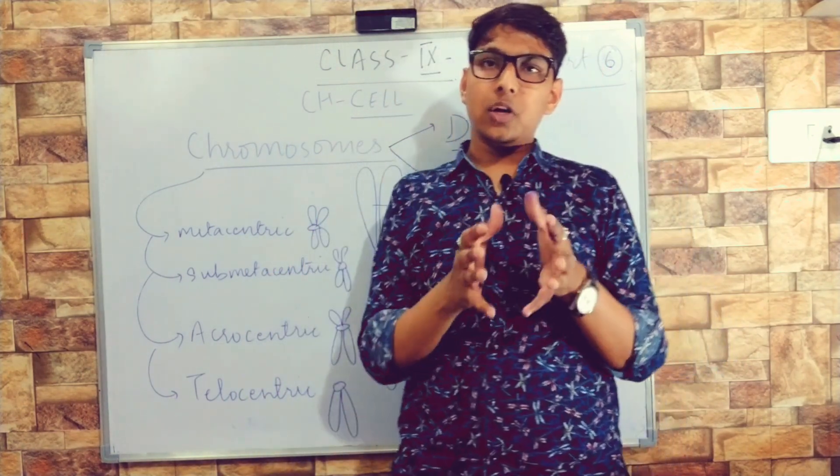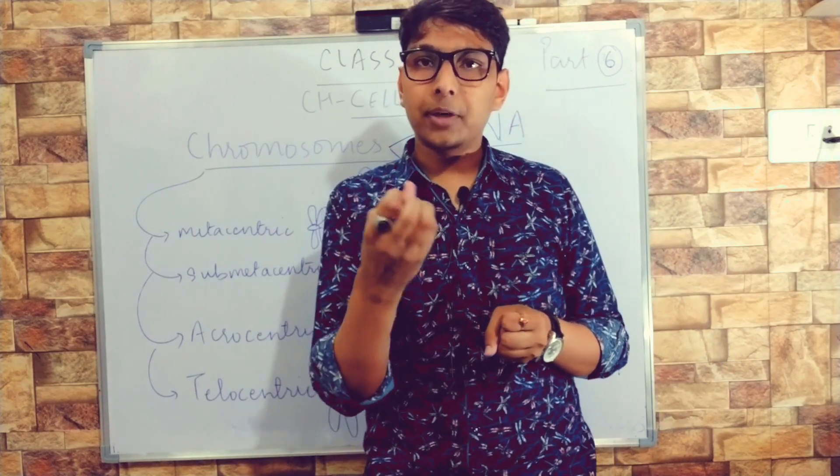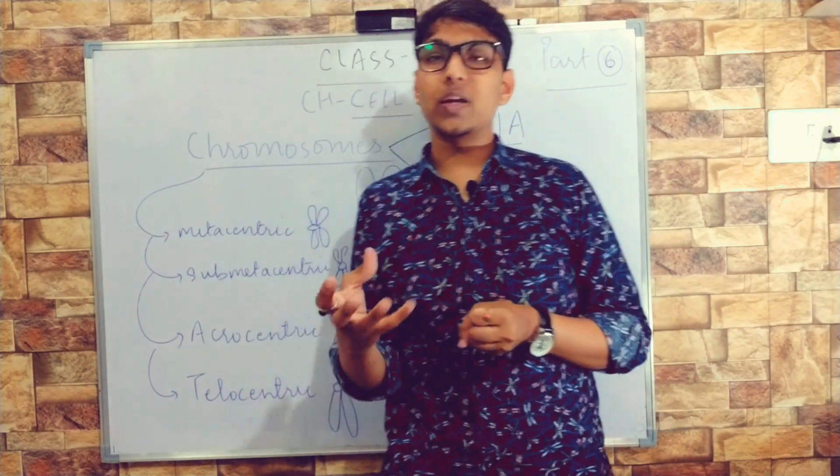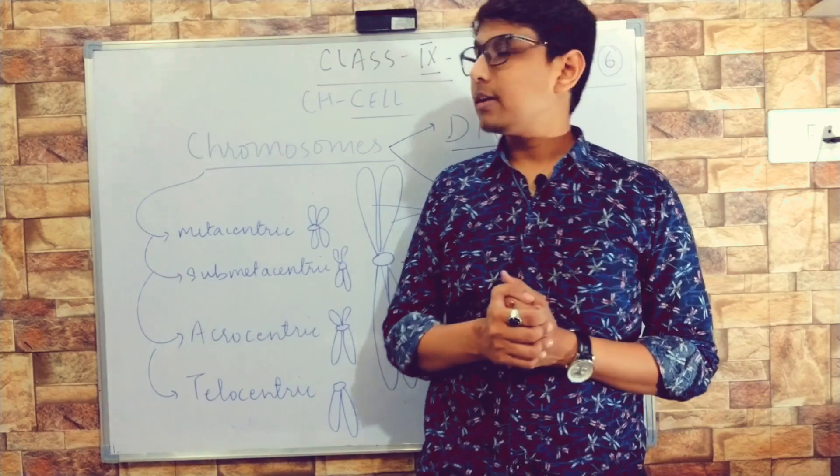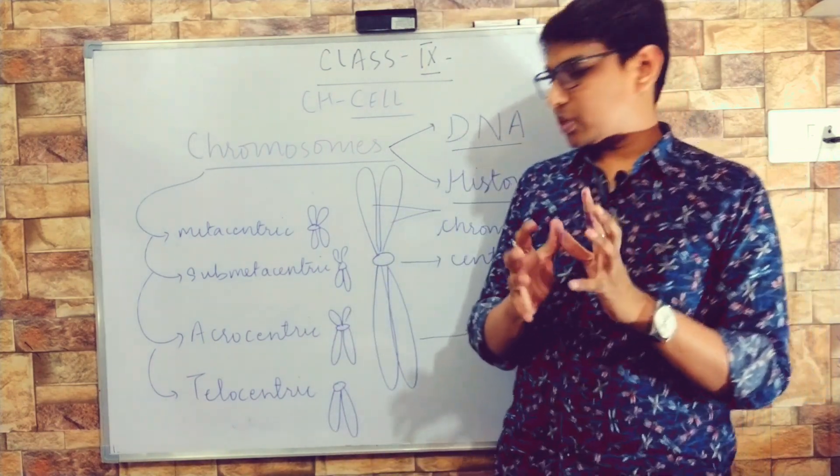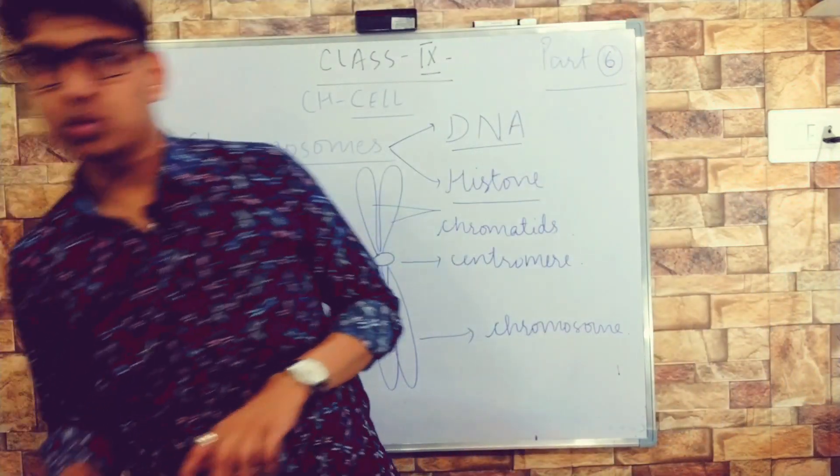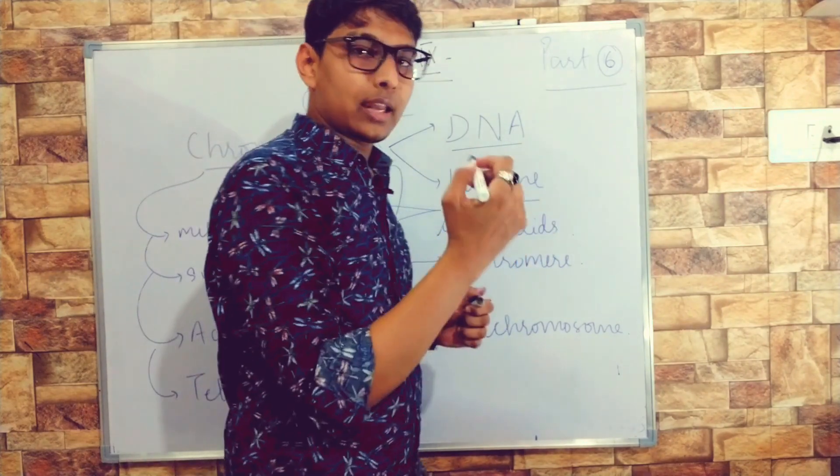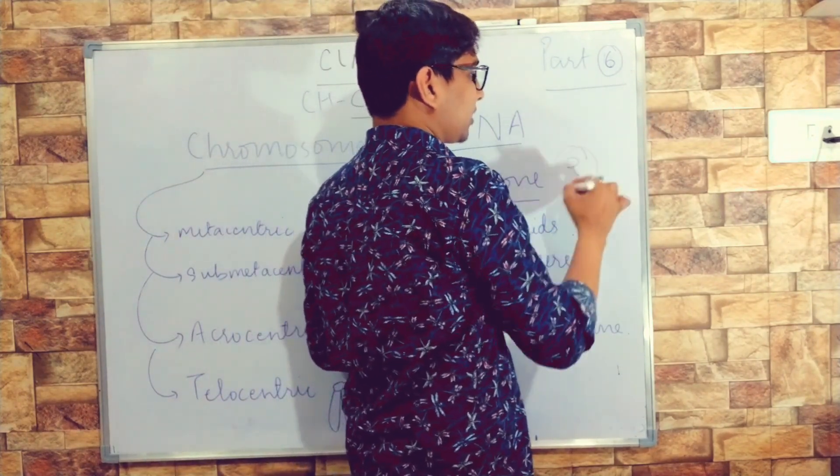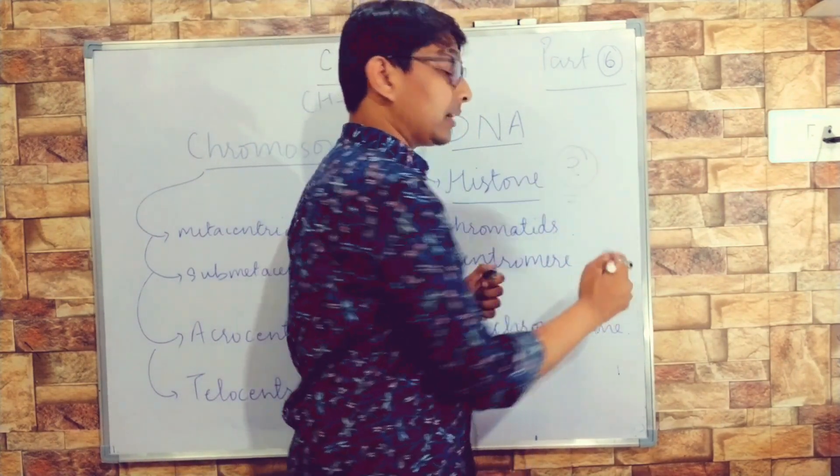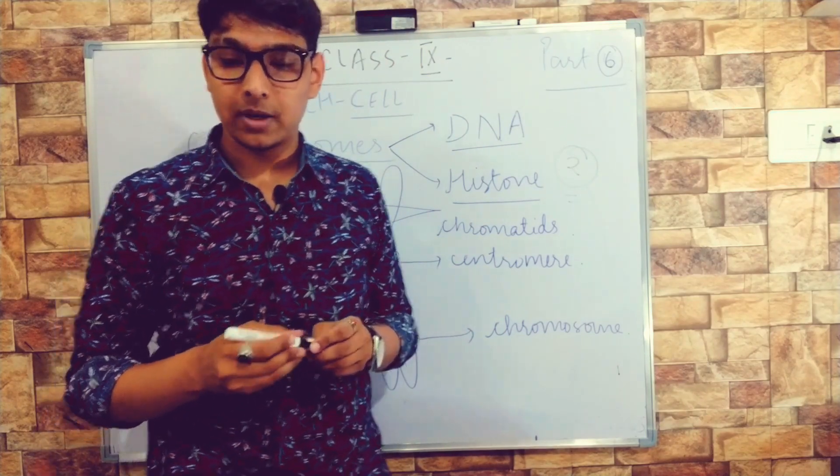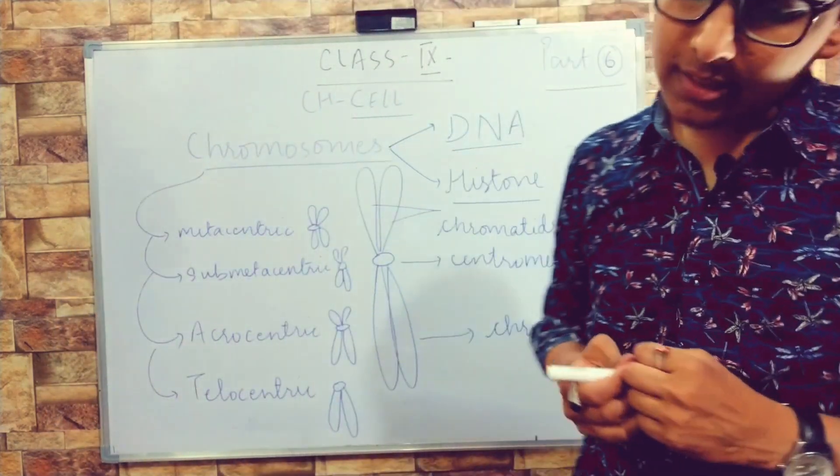Basically, except for germ cells—your sperm cell and ovum—in every cell they are diploid. Haploid means we have 23 pairs of chromosomes present. In most organisms it starts from two and goes to hundreds in pairs of chromosomes.